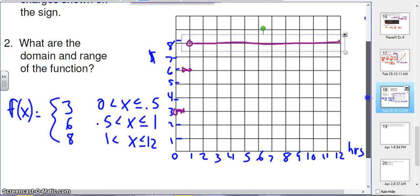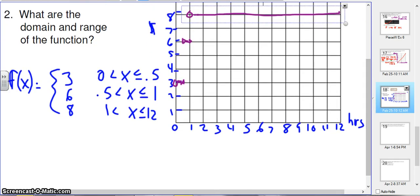What is the domain and the range? Domain, X values. We can only park from zero to 12 hours. And then my range is literally three, six, and eight. Because those are the only amounts of money that I will be charged.